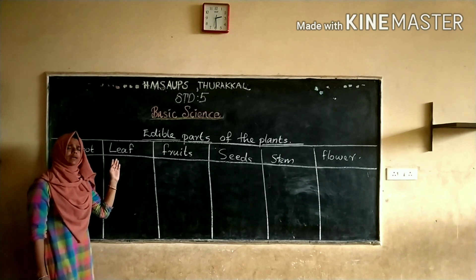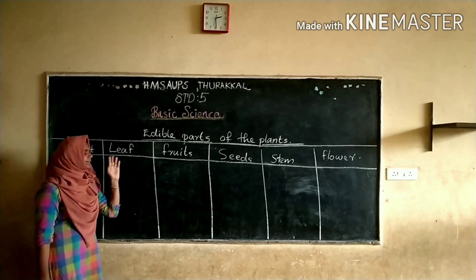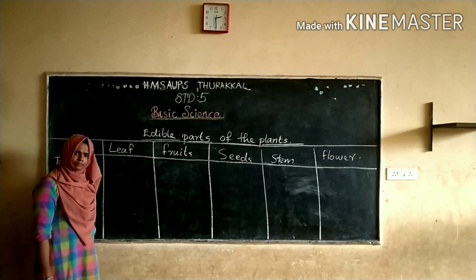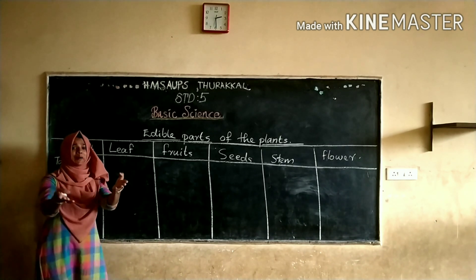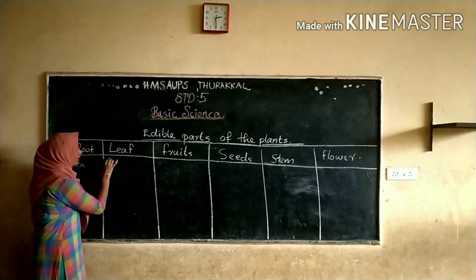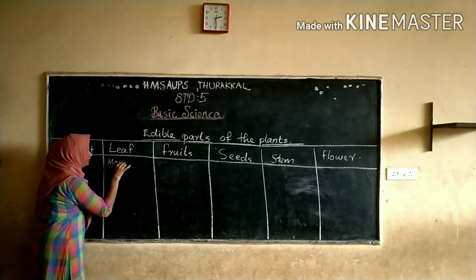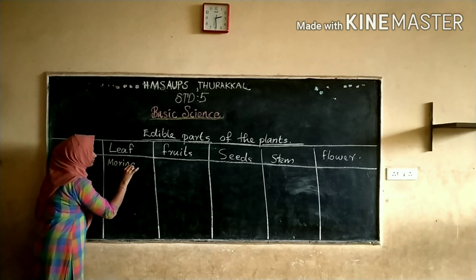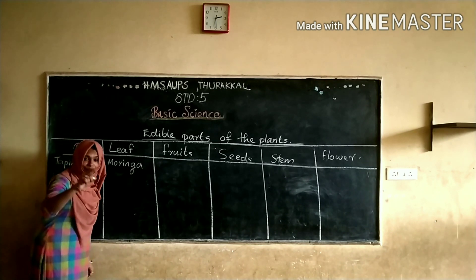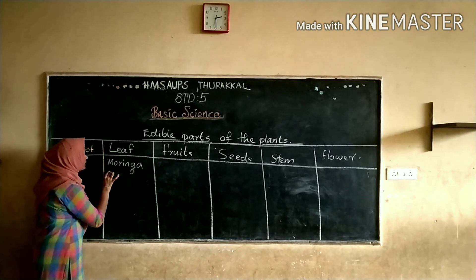Then I want to go to examples for storing food in leaves. Give me some — yeah, muringa. The common plant is muringa. Then, good — pumpkin. Pumpkin.